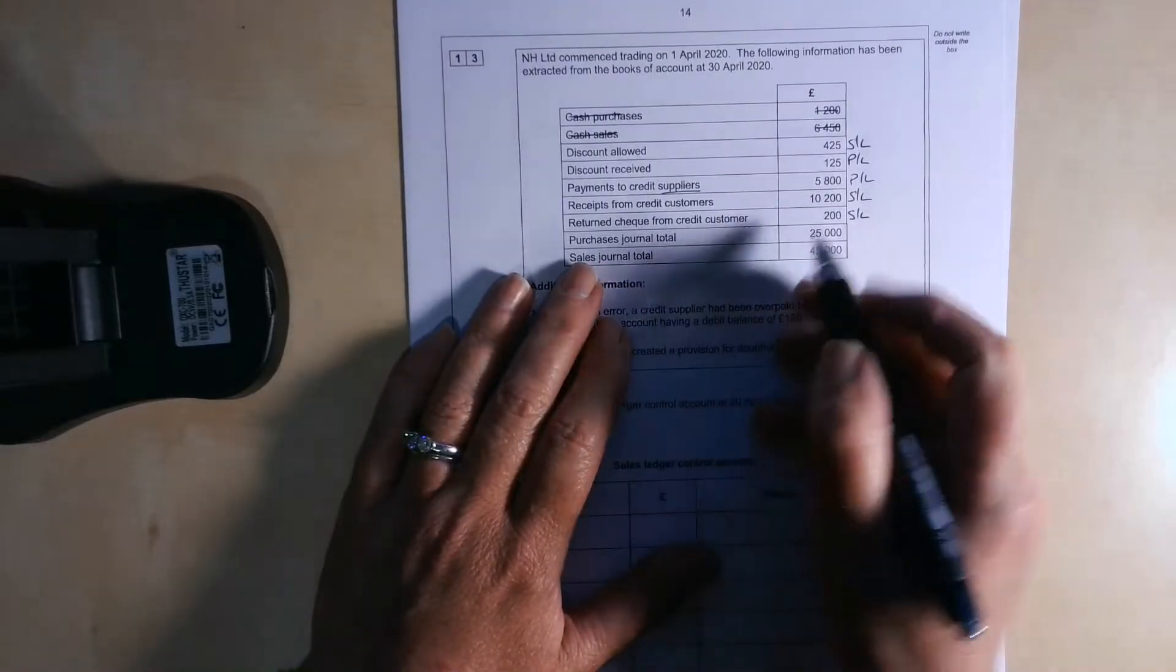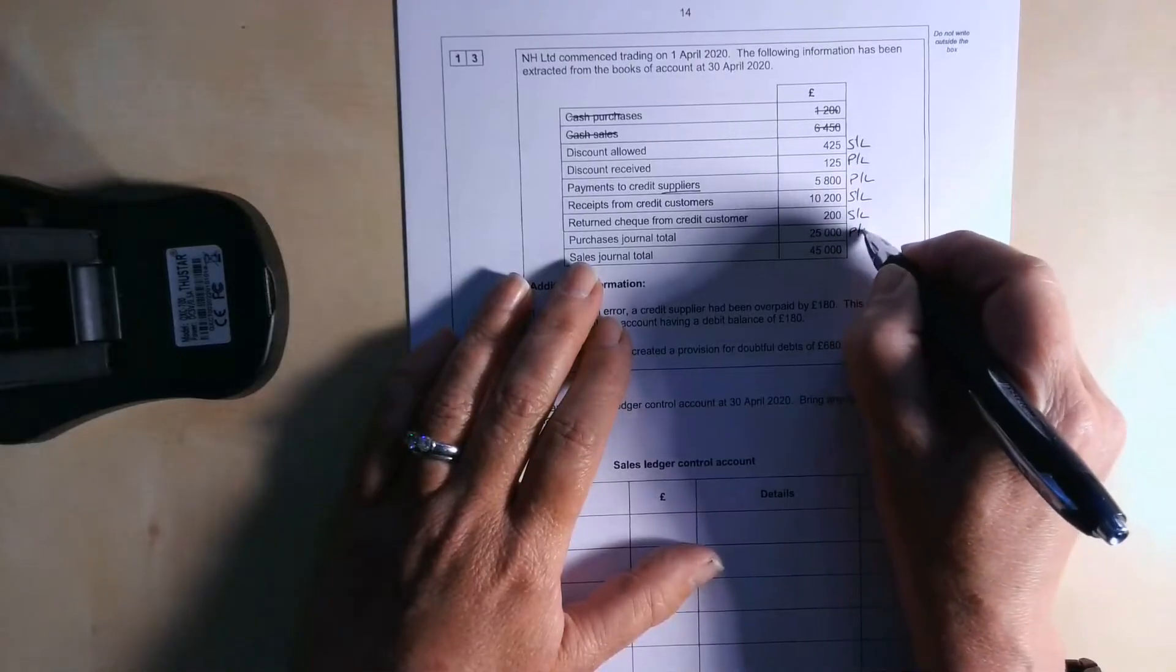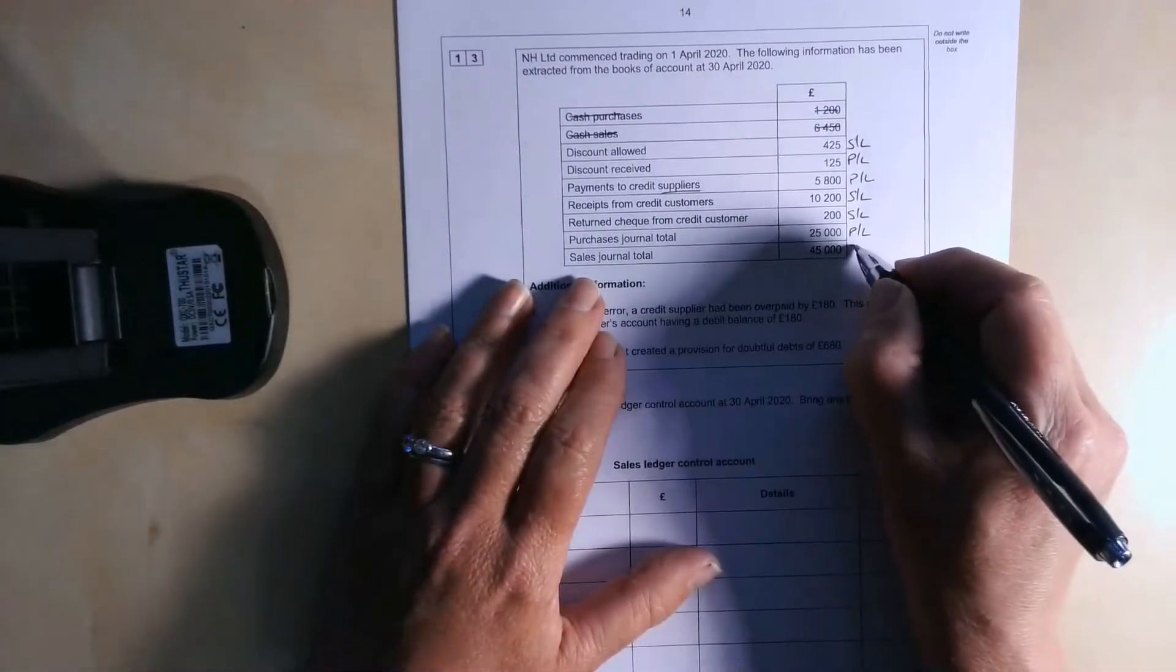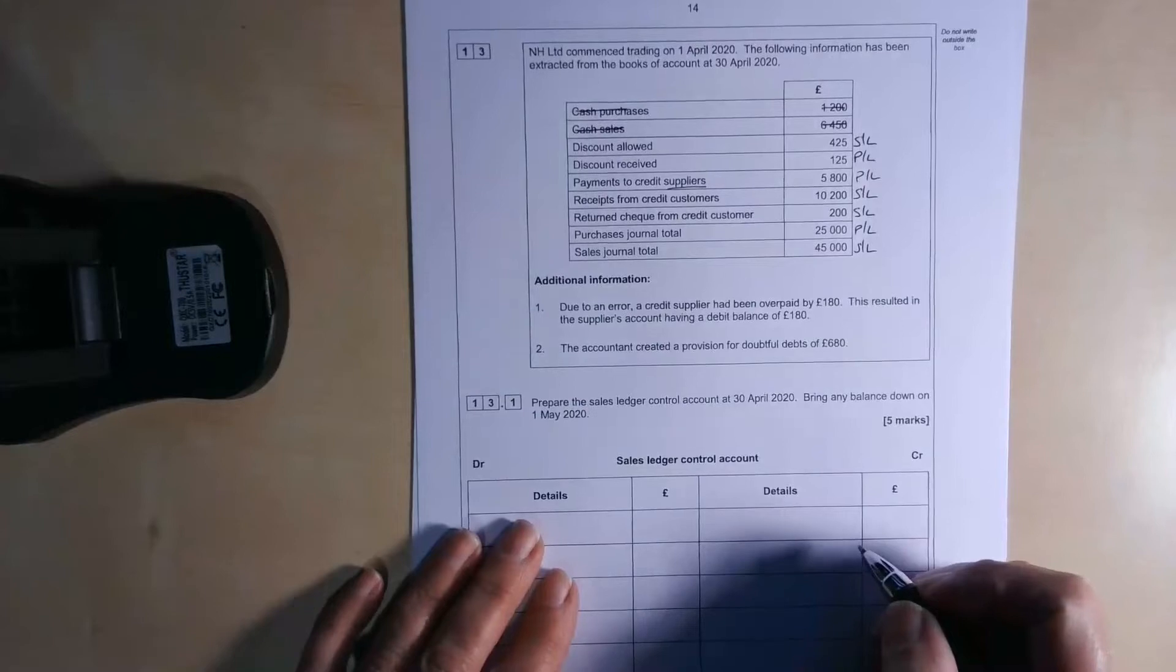So remember, the purchases journal is a book of prime entry. That's obviously going to be purchase ledger. And the sales journal is going to be sales ledger.